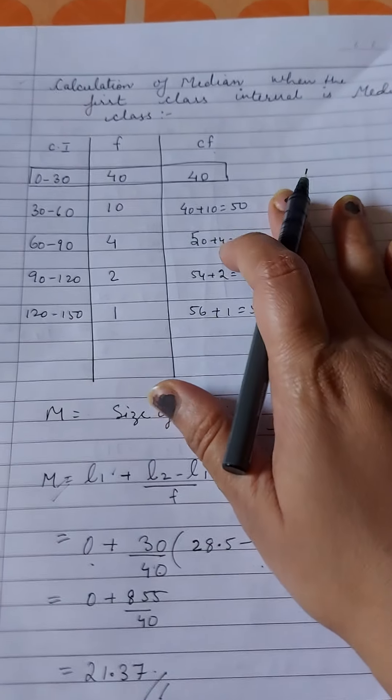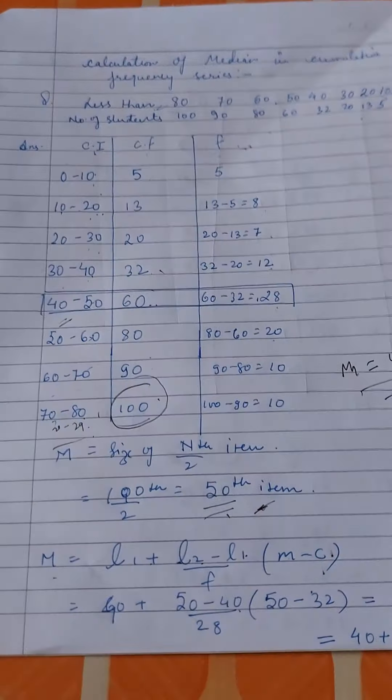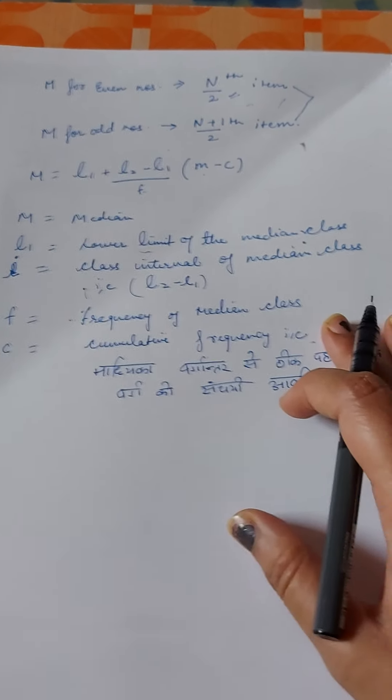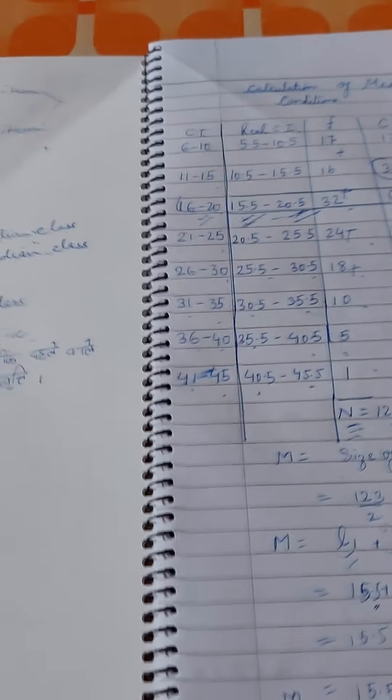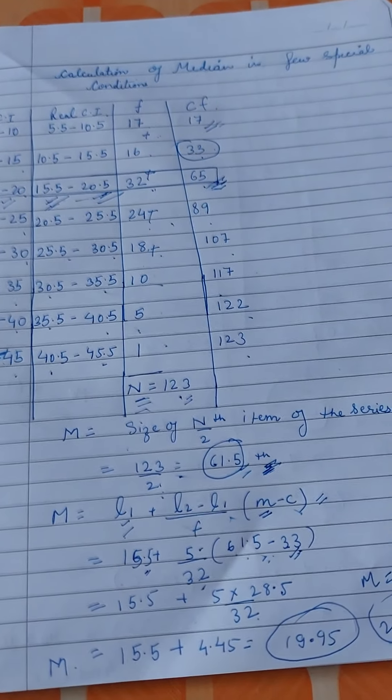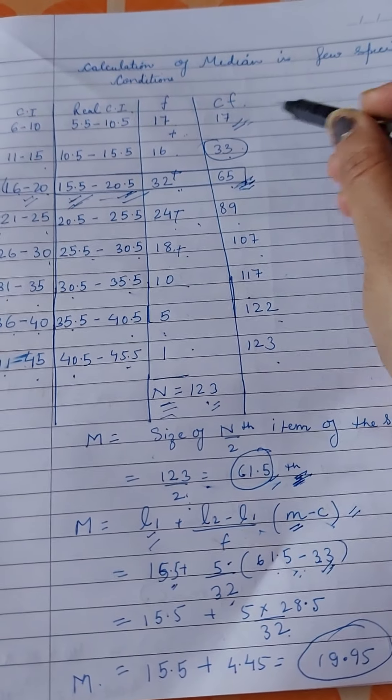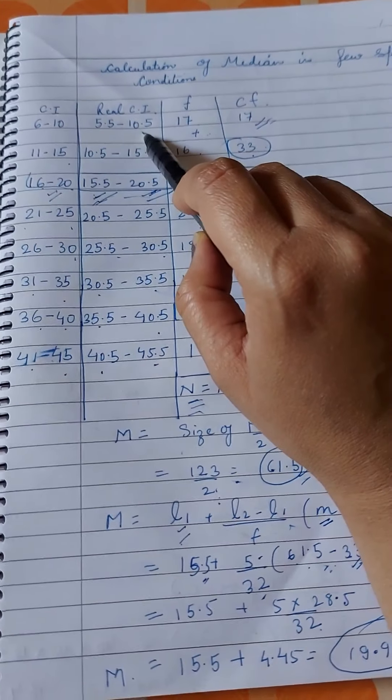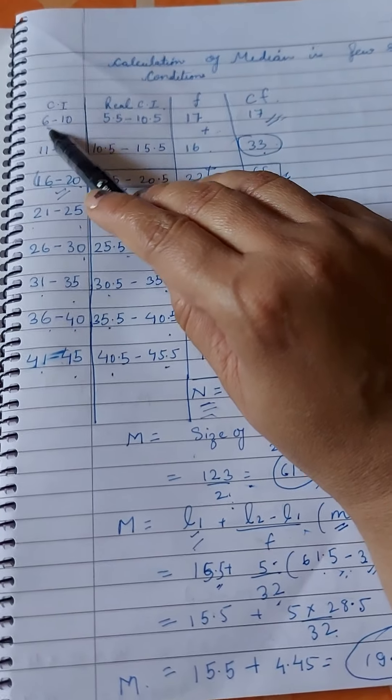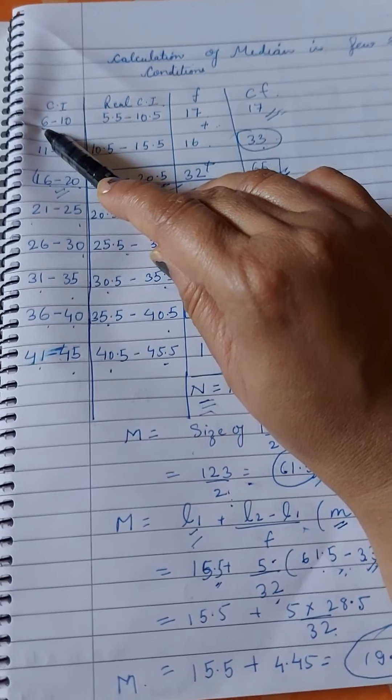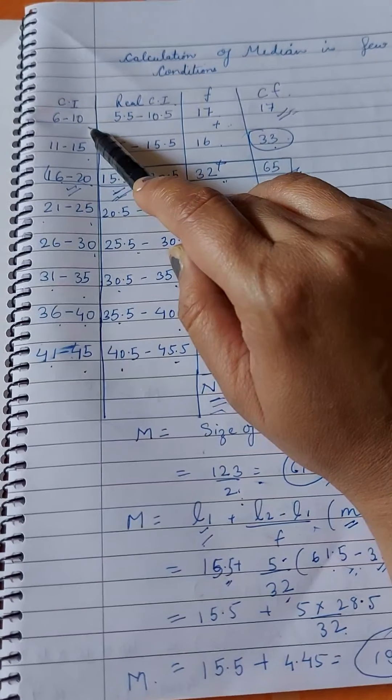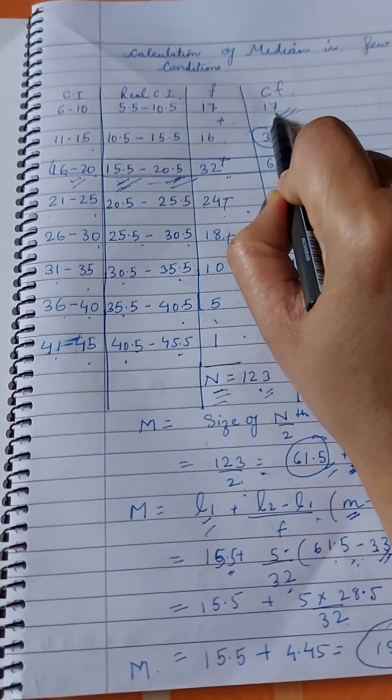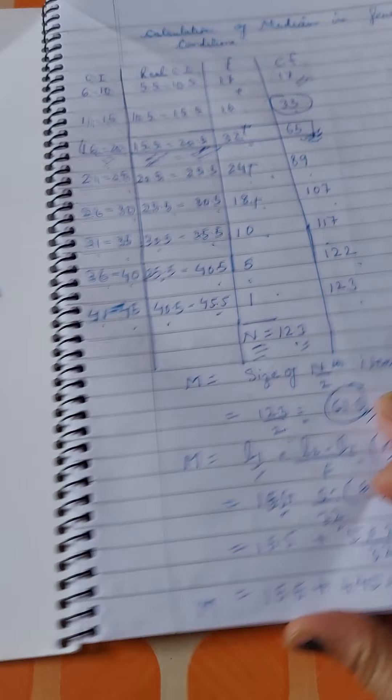So in these types of questions also there shouldn't be any problem. We have discussed so many types of questions. First, we saw the formula in one video - the median formula. Then, there are some special conditions to find median, in which we calculated real class interval from this type of class interval, where we subtracted 0.5 from the first number and added 0.5 to the second number.